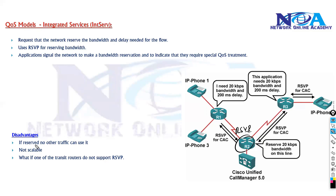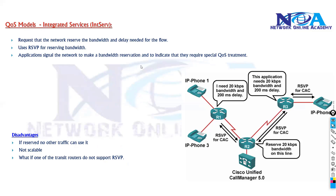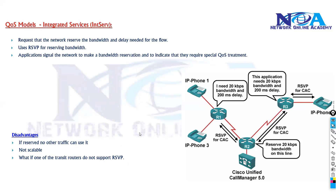For example, if the link is 1.5 Mbps and 512 kbps is reserved for VoIP but VoIP traffic isn't flowing, other users still cannot use that bandwidth — it is completely reserved. If any transit router doesn't support RSVP, the reservation fails. So in today's networks we generally don't use RSVP for normal QoS, although RSVP is still used in some scenarios like MPLS traffic engineering. Overall, the IntServ model is something we no longer use.